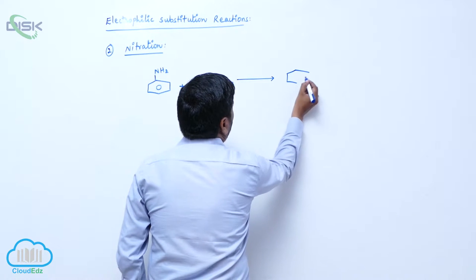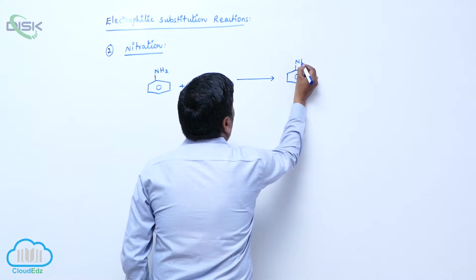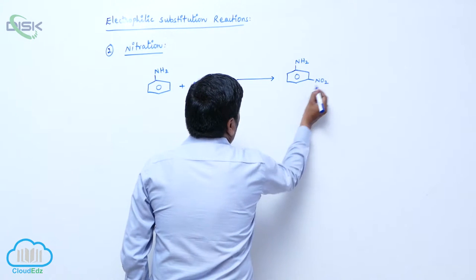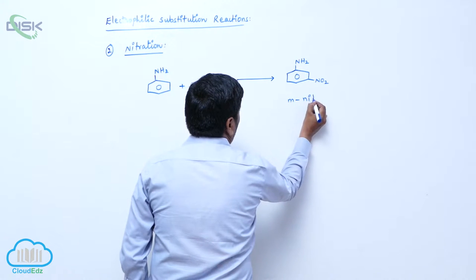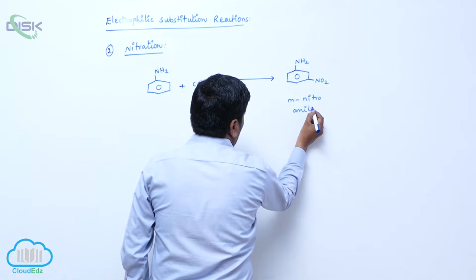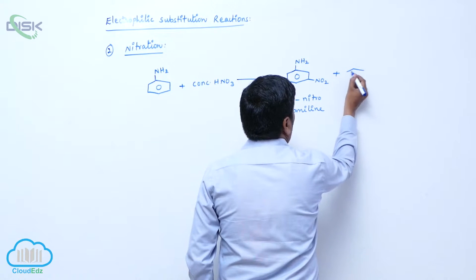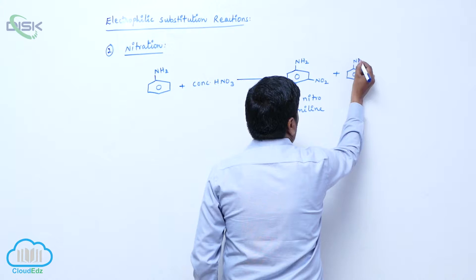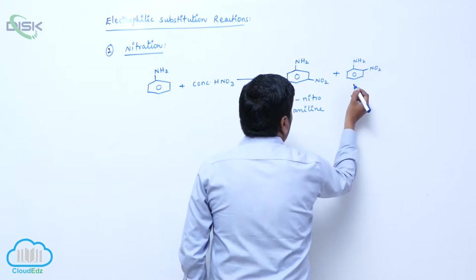It forms meta nitro aniline, meta nitro aniline, plus ortho para nitro aniline, ortho para nitro aniline.